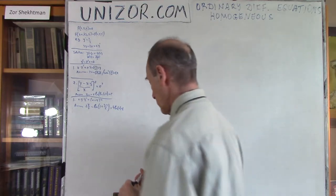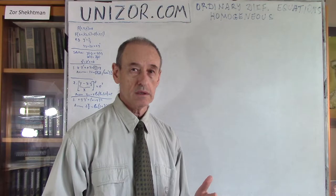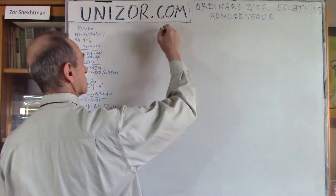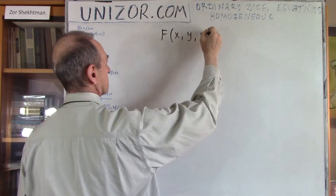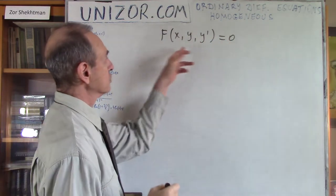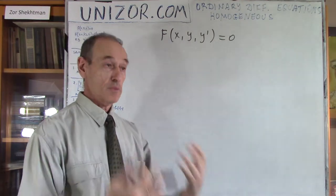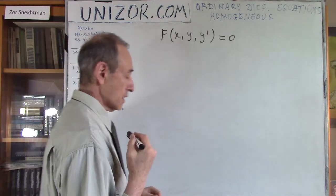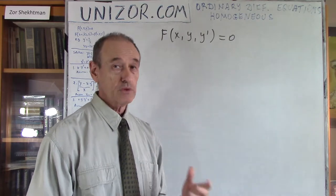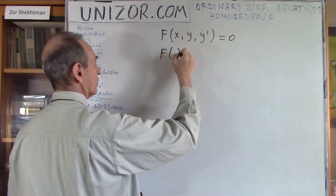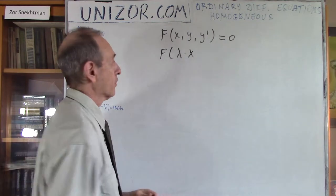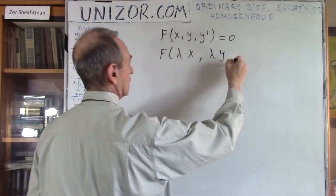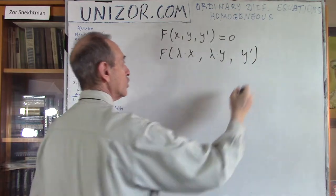First, let me repeat what exactly homogeneous ordinary differential equations are. Ordinary differential equations of the first order involve some function of the argument, the function itself, and its first derivative. The homogeneous differential equations have the following property: if instead of x you put lambda times x, and instead of y you substitute lambda times y, without touching the first derivative, you get exactly the same function — lambda would cancel out.